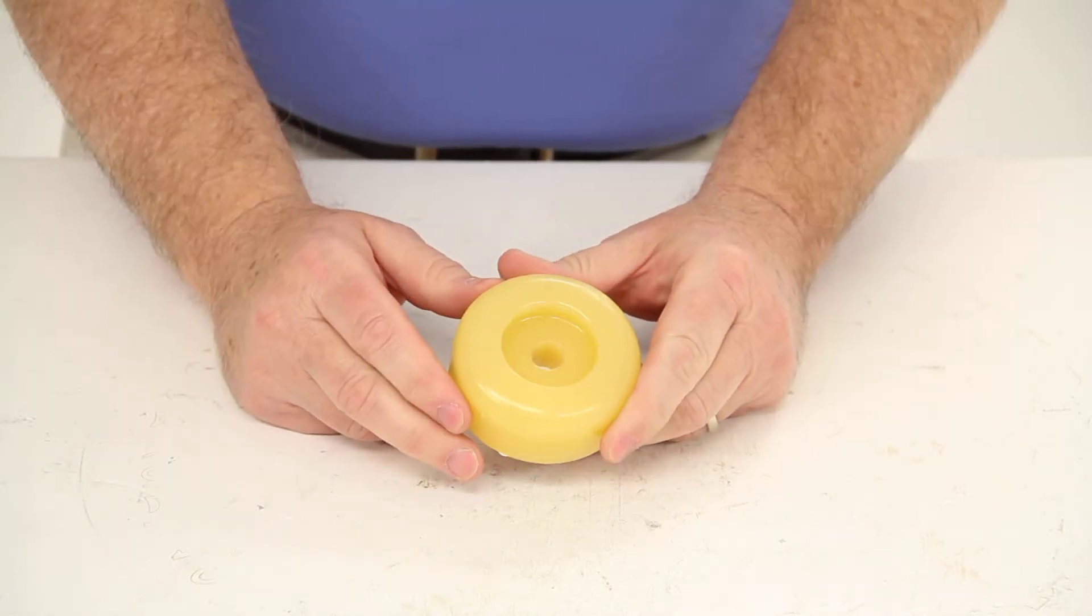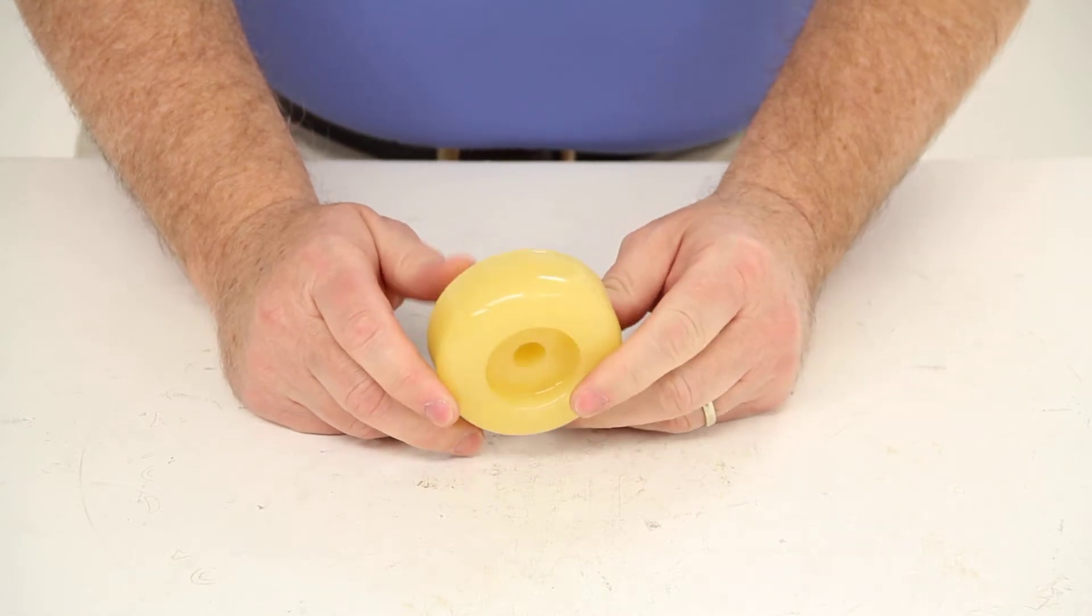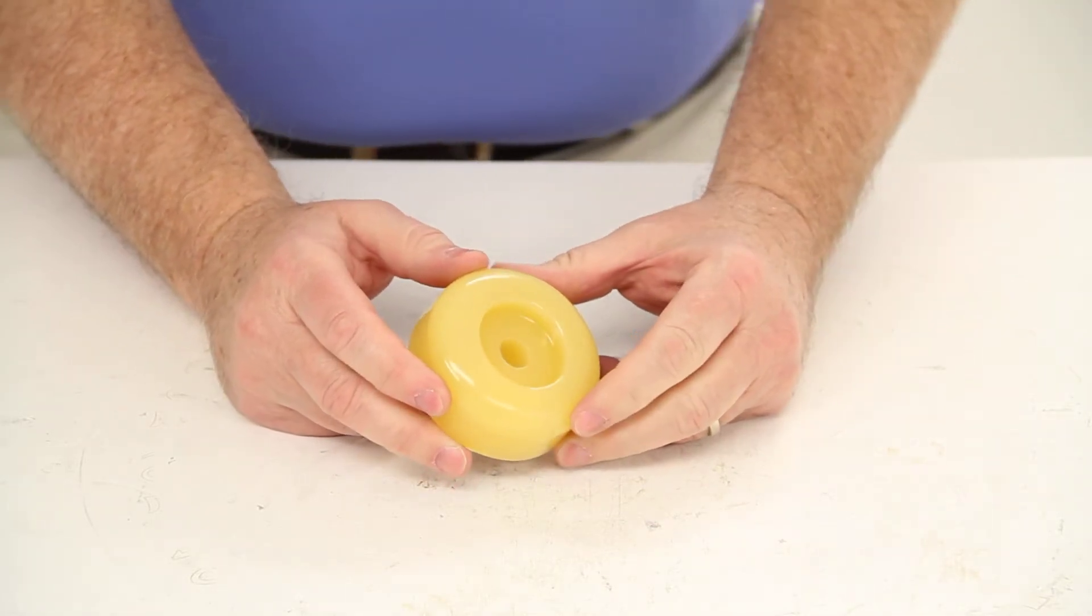Today we're going to review part number YR131-4Y. This is the Yates end cap for boat trailer rollers.